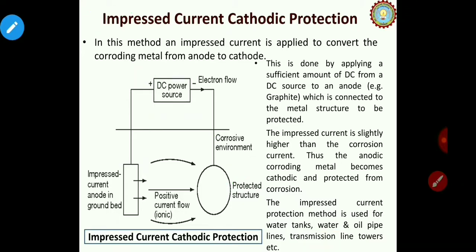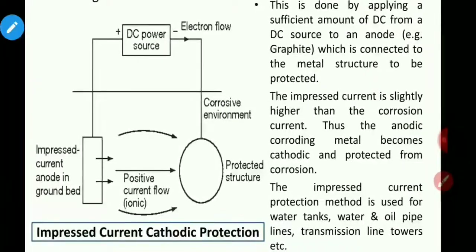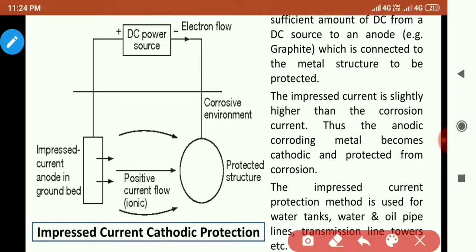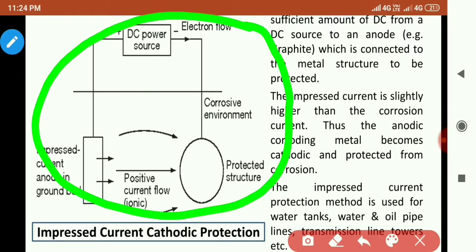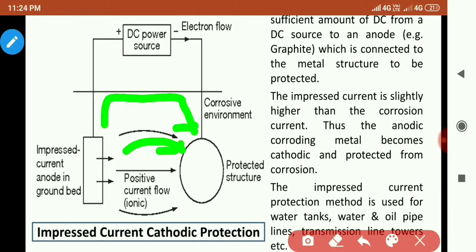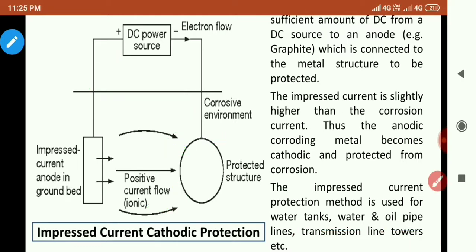The impressed current cathodic protection method is used for water tanks, water and oil lines, transmission line towers, etc. In the diagram, electrons flow from the graphite anode to the metal structure (cathode), and internal current flows in the opposite direction. By applying direct current to the graphite anode, the metal structure is forced to behave like a cathode and is protected from corrosion.